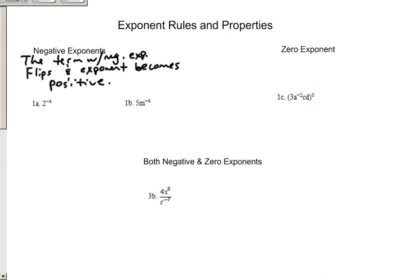Now, it's important that you realize I said the term with the negative exponent, not necessarily everything, only the term that has a negative exponent. So, for example, in this first one, 2 to the negative 4th, you could really say that that's over 1, like any number. Well, when you flip that, it becomes 1 over 2 to the positive 4th, and you could go even one step further and say that that's 1 over 16.